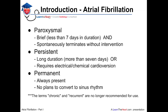The terminology for atrial fibrillation is very important in order to clearly communicate the situation a specific patient is experiencing. Paroxysmal atrial fibrillation is defined as brief atrial fibrillation lasting for less than seven days in duration and spontaneously terminating on its own without intervention — meaning without electrical or chemical cardioversion. Persistent atrial fibrillation is of a longer duration, specifically more than seven days, or it is atrial fibrillation that requires electrical or chemical cardioversion. Permanent atrial fibrillation is when atrial fibrillation is always present, as the name implies.